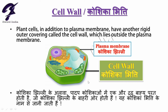Koshika bhitti ke alava, padap koshikaon mein ek aur dhrdi bahari parath hoti hai, jo koshika jhilli ke bahar hoti hai. Jaise ki ham dekh rahe hain, jo koshika jhilli hai, uske bilkul bahar ki taraf ek aur jo parath hai, use hum koshika bhitti ke naam se jante hain.